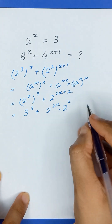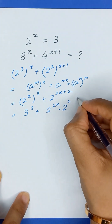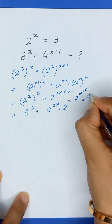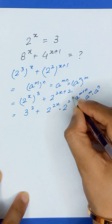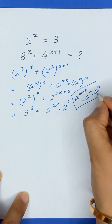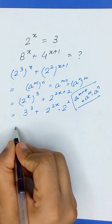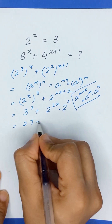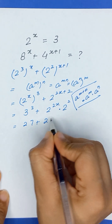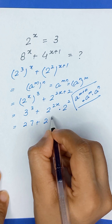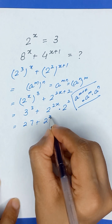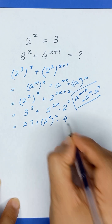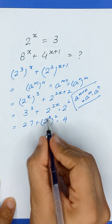As we know, a to the power m plus n is equal to a to the power m times a to the power n. So it becomes 27 plus 2 to the power 2x, which we can write as 2 to the power x, squared, times 4.